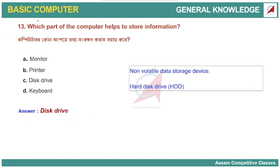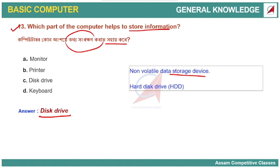Which part of the computer helps to store information? The answer is Disc Drive. The Disc Drive is where information is stored — it is a storage device. It is a non-volatile data storage device, meaning the data is retained even when power is off.